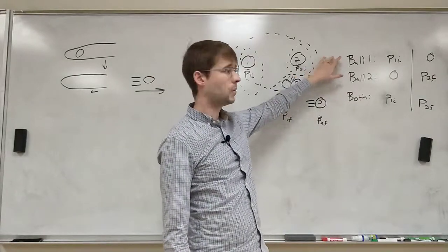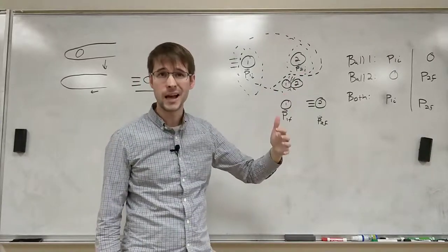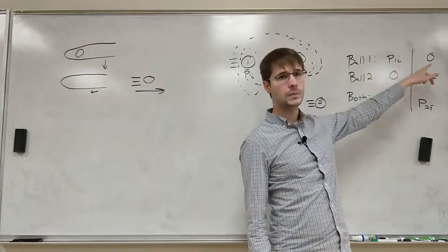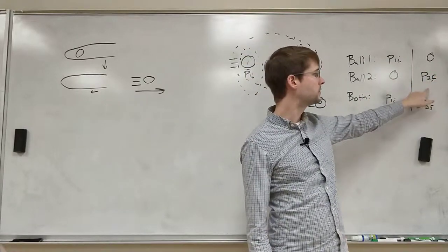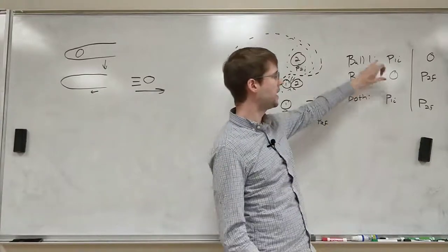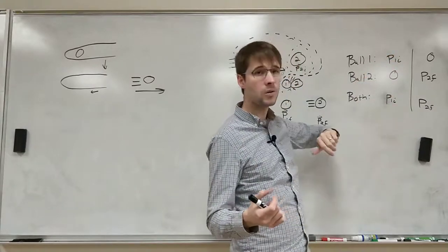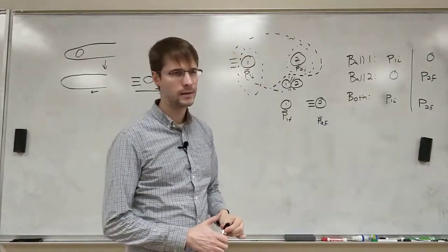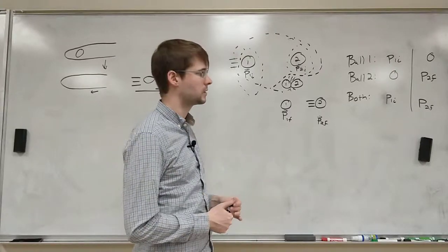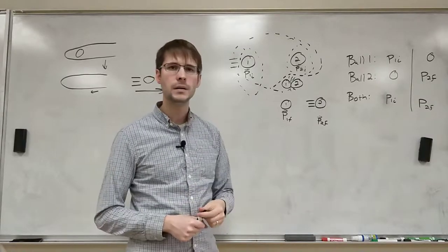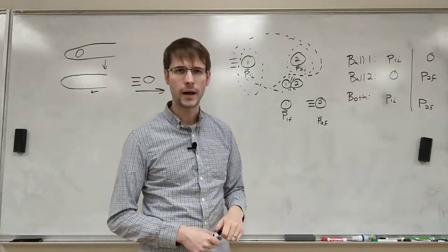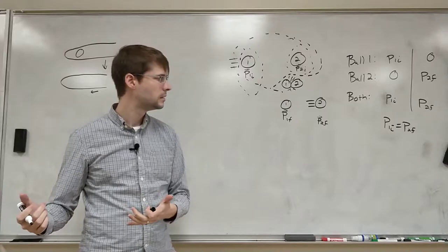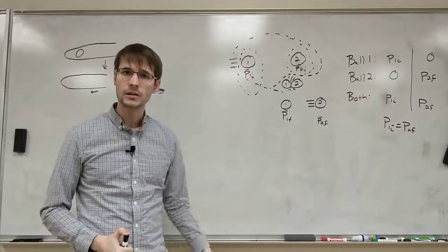Ball one has a momentum of p1 initial, and p2 initial is zero because ball two is stationary at the beginning. Ball one has an initial momentum but no final momentum; ball two has no initial momentum but does have a final momentum. But if we look at the whole system together, we add these two momentums together and get a total momentum. We can say that the momentum is actually conserved — it doesn't change. The initial momentum equals the final momentum: p1 initial equals p2 final.